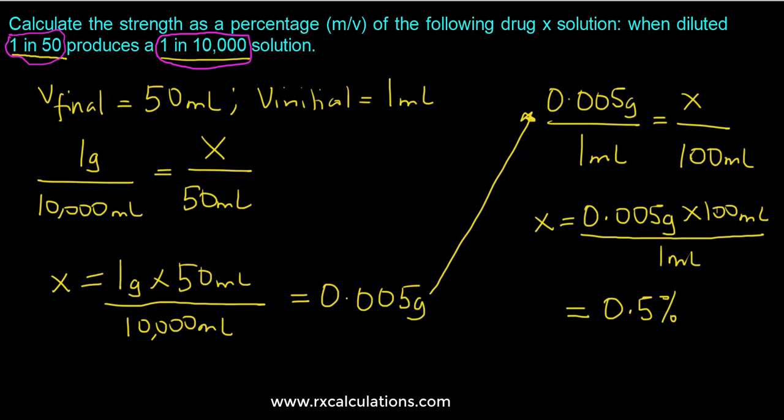Okay and so what that means is you can determine your final volume is going to be 1 to 50. So if your final volume is 50 ml then the initial volume is going to be 1 ml.